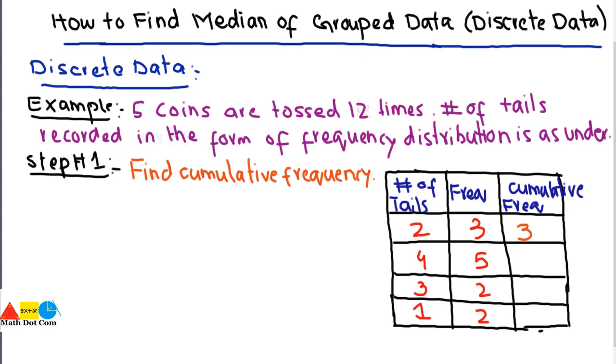In the next observation, we add the previous one with the current one: 3 plus 5 equals 8. Then we add 2 with 8, which equals 10, and then 10 plus 2 equals 12. This is the cumulative frequency.